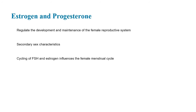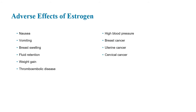Estrogen and progesterone regulate the development and maintenance of the female reproductive system, secondary sex characteristics, and the cycling of FSH and estrogen, influencing the female menstrual cycle. The adverse effects of estrogen include nausea, vomiting, breast swelling, fluid retention, weight gain, high blood pressure, breast cancer, uterine cancer, and cervical cancer. This is important because estrogen is in birth control — estrogen and progesterone are the two components of hormonal birth control, so all of these are actual side effects of being on birth control, especially if you're on it too long. They say 10 years is the most you should be on hormonal birth control.